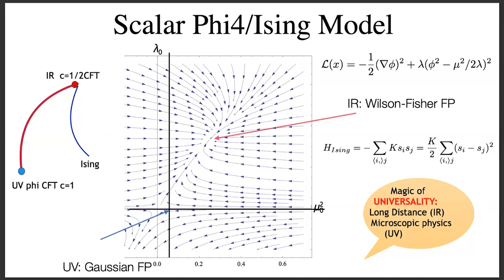Let's go back to φ⁴ theory, which is the standard problem to practice on. φ⁴ theory has this Lagrangian: a derivative term, a φ⁴ term, and a mass term. I made the mass term negative so that it gives a double well potential.